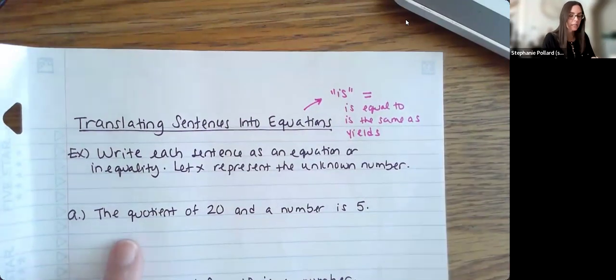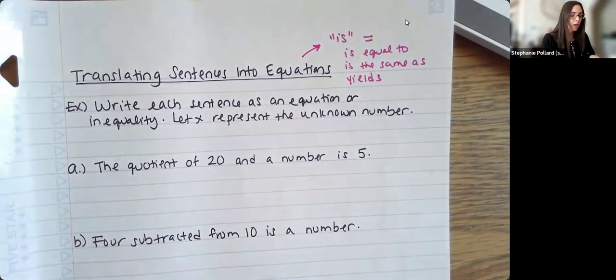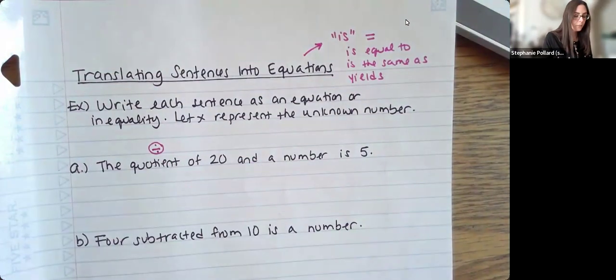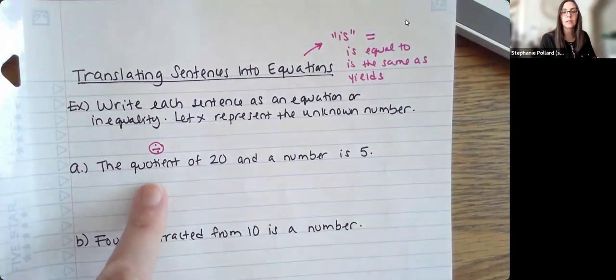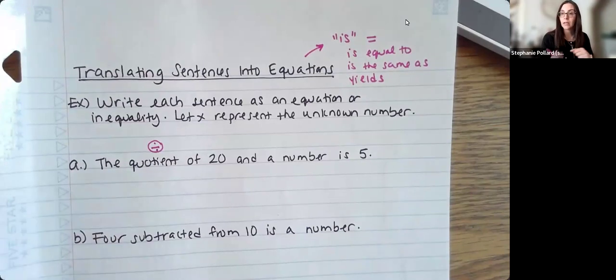So here it says the quotient of 20 and a number is 5. Now quotient, we know, means division. So I'm going to be thinking some sort of division going on here. Remember for division and subtraction order does matter, because they are not commutative, meaning you cannot just interchange the order of things. So we do have to be really particular for subtraction and division problems.